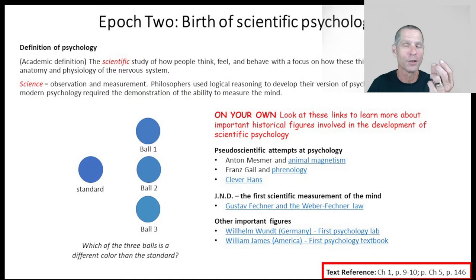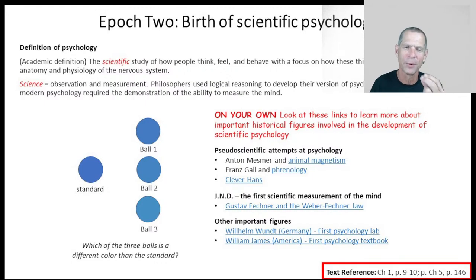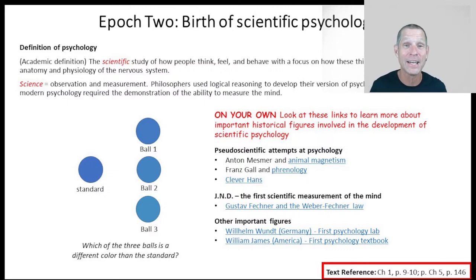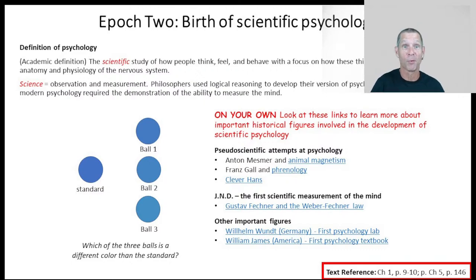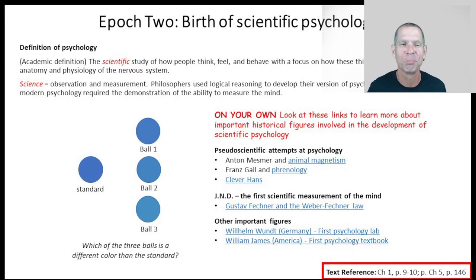This may not seem impressive to you, but in 1850 this was like discovering bread or electricity. People realized: you can actually measure the mind. So I would argue 1851 was when psychology was born as a science — and that would be Gustav Fechner. If you're interested in learning more about the JND, click on the link and you can read about how Gustav Fechner did his research.